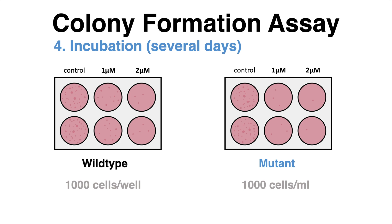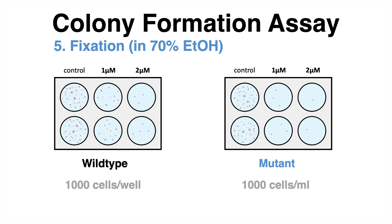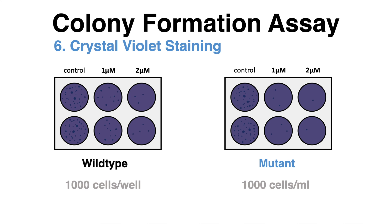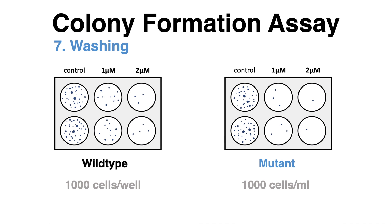To facilitate the counting of colonies, a staining is performed. After removing the medium, the cells are fixed in 70% ethanol for 10 minutes. The ethanol is aspirated and the plates are left to dry for some hours. Next, the cells can be stained for some minutes using a dye such as crystal violet. A subsequent washing step removes all the purple, bluish background color, and only the colonies are clearly observable after the staining.